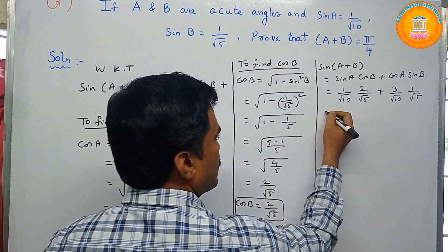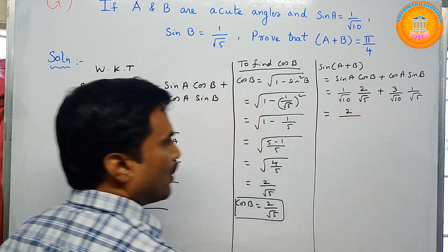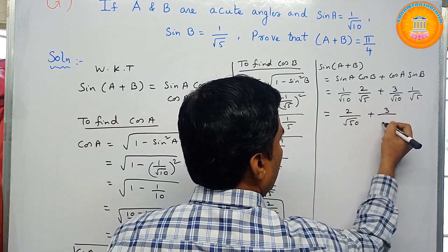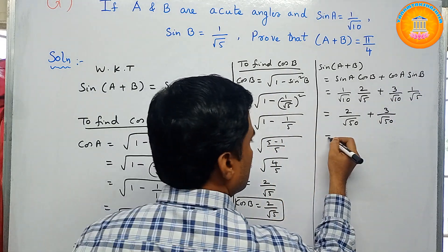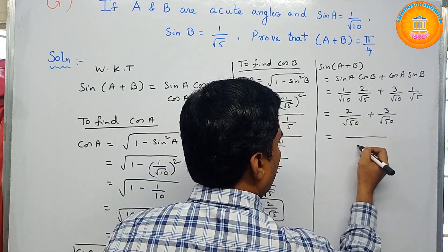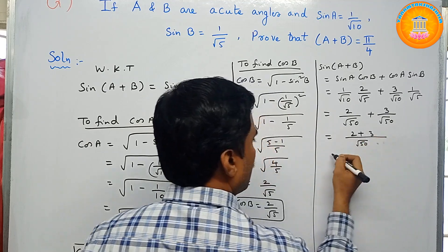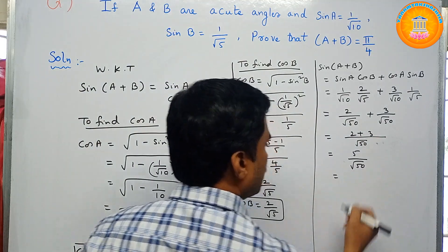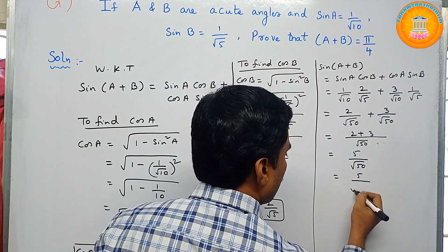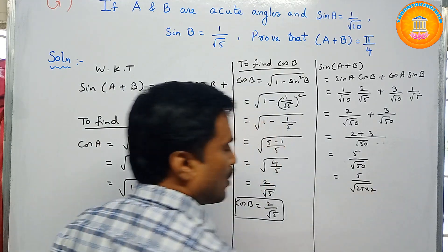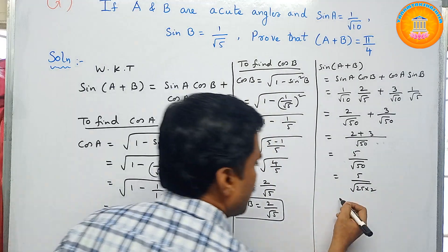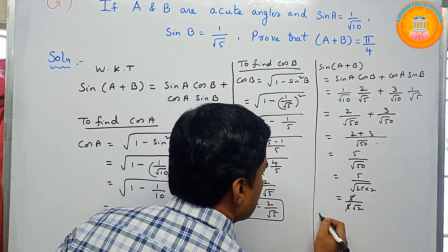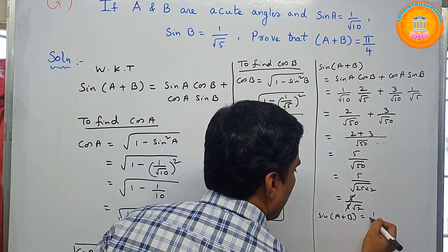Simplifying: (1/√10)(2/√5) = 2/√50, and (3/√10)(1/√5) = 3/√50. Since the denominators are the same, take LCM: (2 + 3)/√50 = 5/√50. Now write √50 = √(25 × 2) = 5√2, so 5/(5√2) = 1/√2. Therefore sin(A + B) = 1/√2.